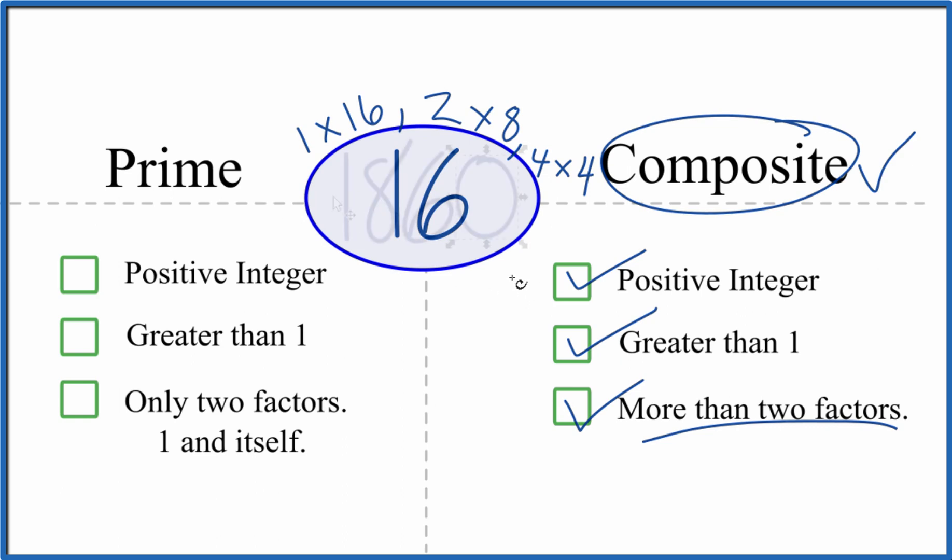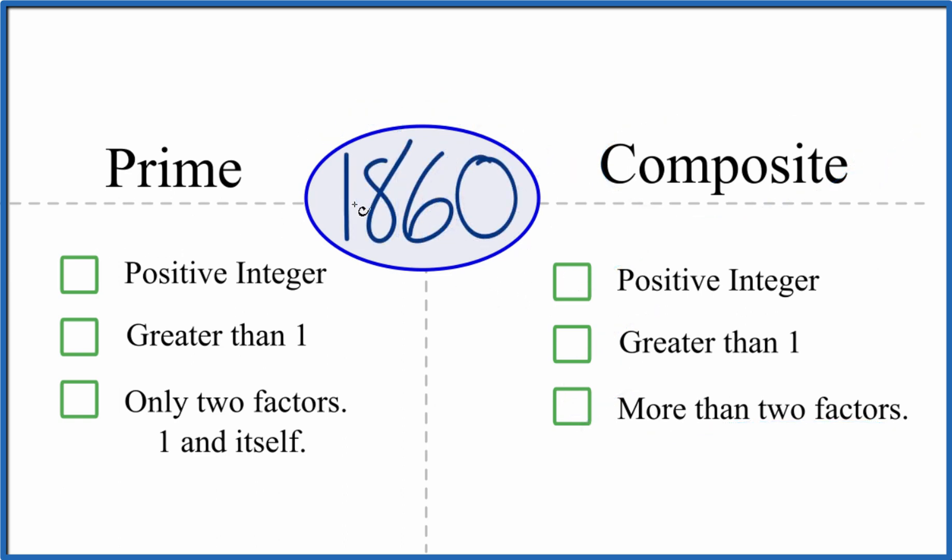Let's try another one. How about 1,860? Well, it's an even number. They're going to be more than two factors. So those even numbers other than two, they're going to be composite. Let's try one that's a little bit more difficult.